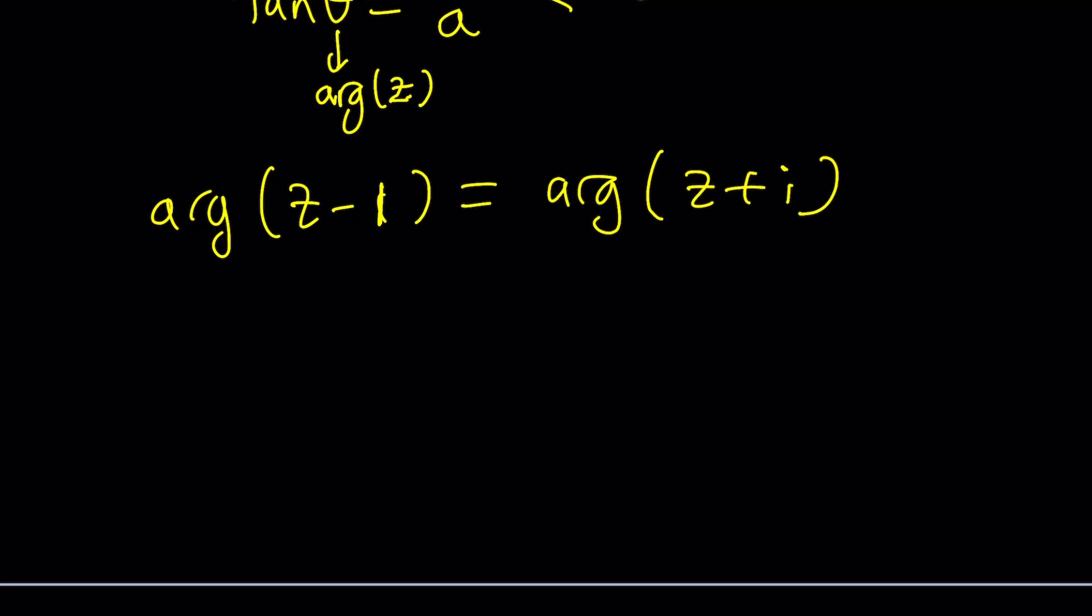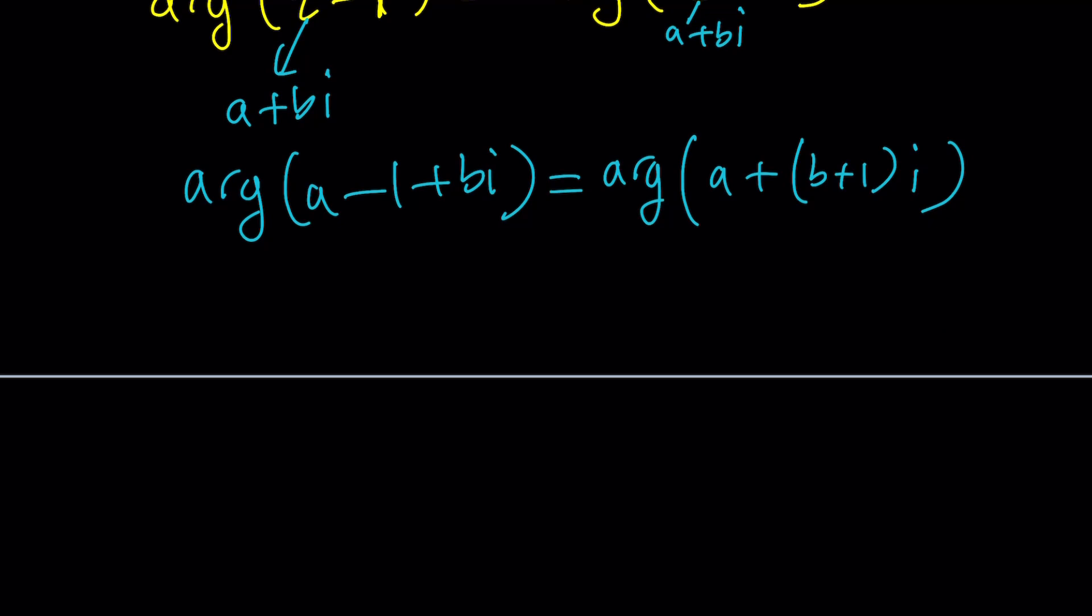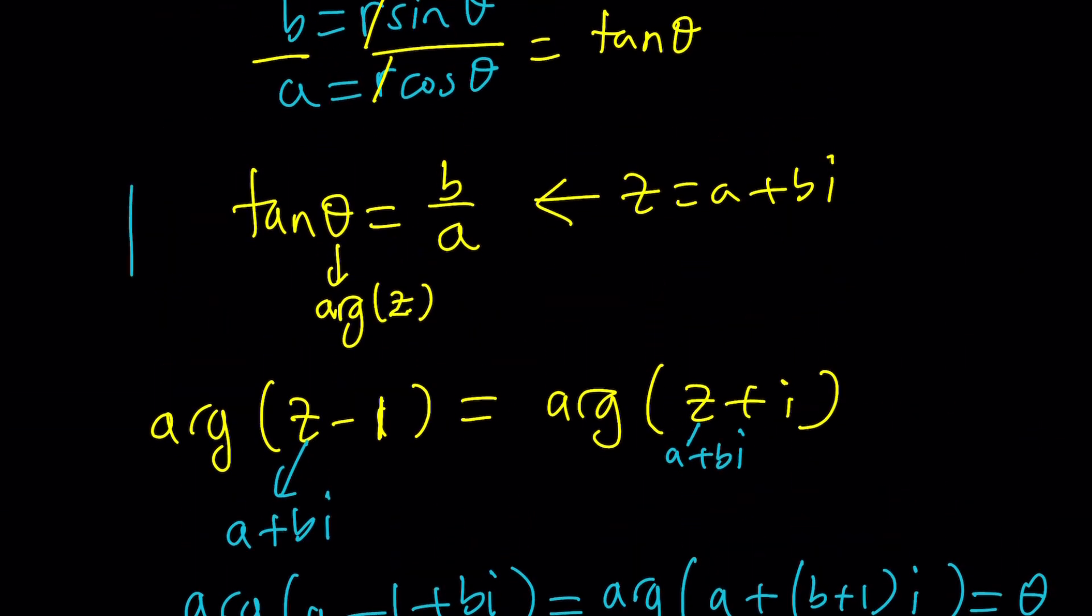Here's what we're going to do. We're actually going to replace Z with A plus BI. That's the name of the channel, right? So now this becomes argument of A minus one plus BI. And on the right hand side, since this is going to be A plus BI again, we're going to get argument of A plus the quantity B plus one I. So the real part is changed on the left, and the imaginary part is changed on the right. But now they're equal. So we can basically say that, hey, what if they're both equal to theta? Then we can start talking about tangent theta. This is the critical part.